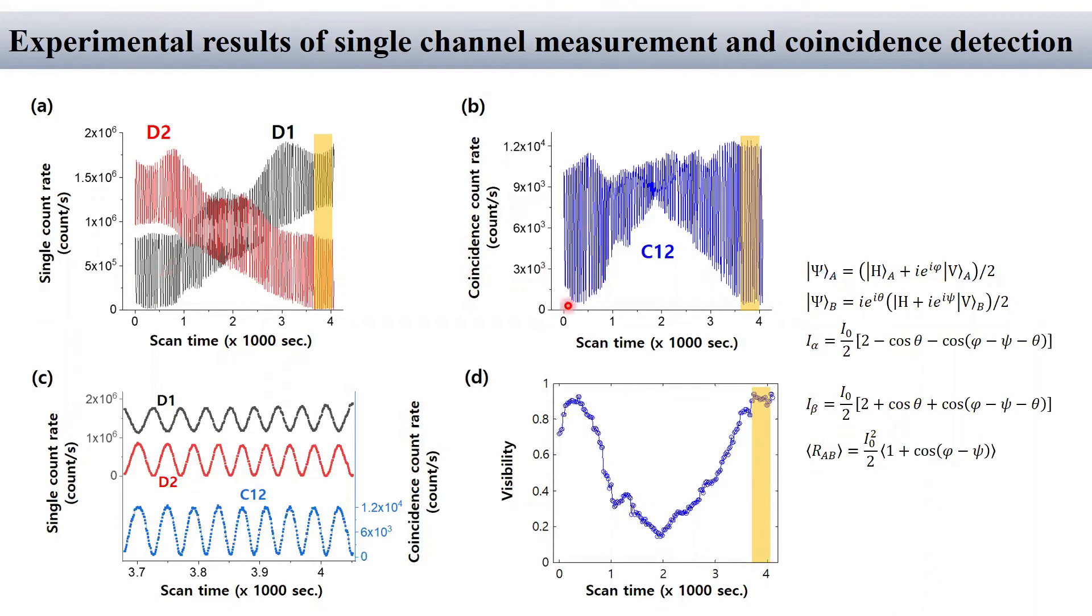Data of figure B is obtained at the same time with figure A. Only the bunched pairs contribute to the coincidence measurement corresponding to the second order correlation. So what I want to say in this chapter is that the result of the second order correlation comes from the first order correlation.